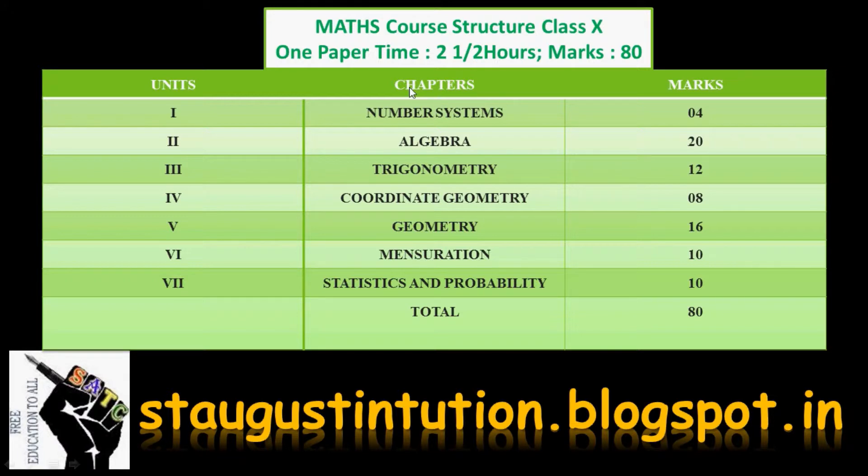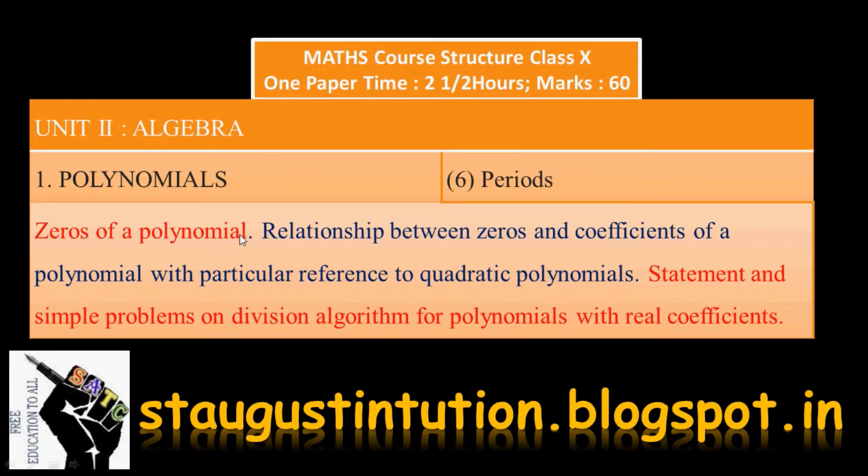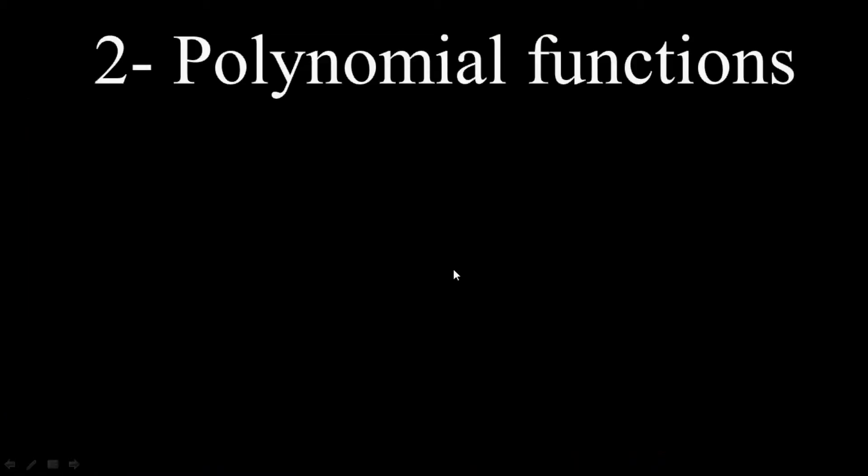Course Structure: In Algebra, there are 20 marks. You will mark it in Algebra. That's the Polynomials. The syllabus includes zeros of a polynomial, relationship between zeros and coefficients of a polynomial with particular reference to quadratic polynomials, statements and simple problems, division algorithm for polynomials with real coefficients.